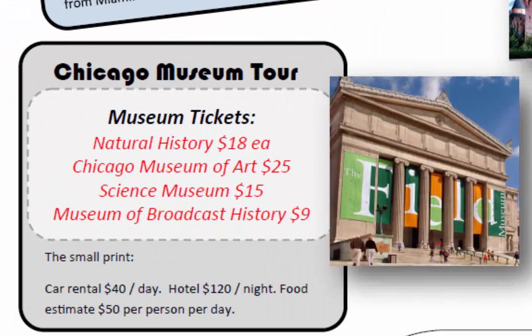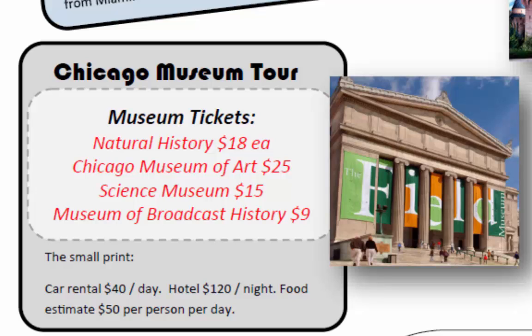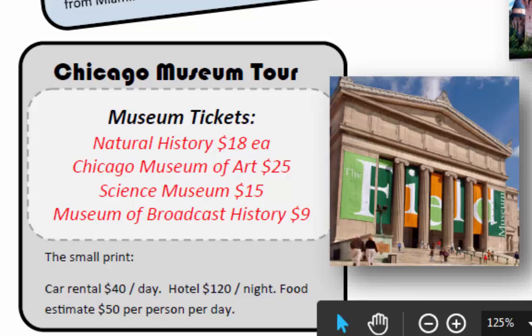They will spend money on a hotel and estimate $50 per person on food each day. Lastly, we have Chicago — a city of museums. They're going to visit the Natural History Museum, the Museum of Art, the Science Museum, and the Broadcast History Museum. Each of these prices is per person. In Chicago, they have to rent a car, their hotel is a bit more expensive, and they estimate about $50 per day for food.